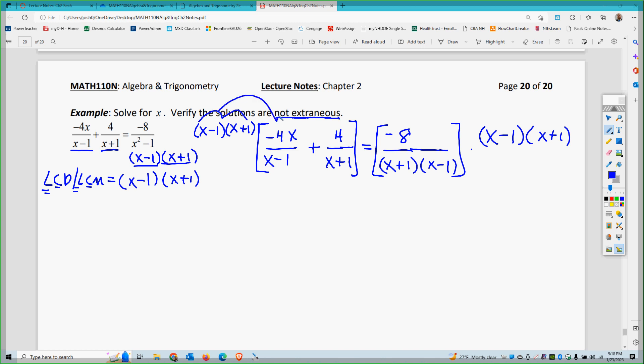On the left side, this times the negative 4x will cancel on x minus 1, so I'm left with negative 4x, x plus 1. Then this times the 4 will cancel on x plus 1, so I'm left with plus 4, x minus 1. On the right-hand side, I'm left with negative 8 because all of this times this will cancel the denominators.